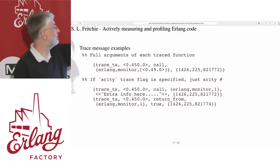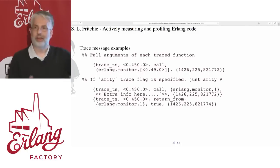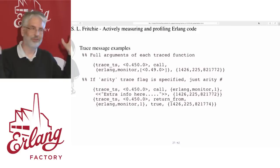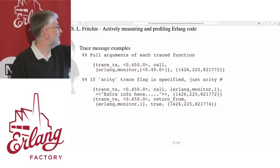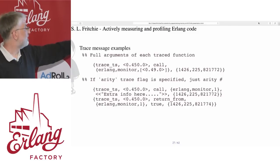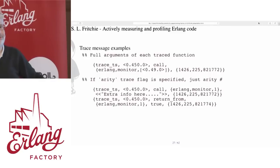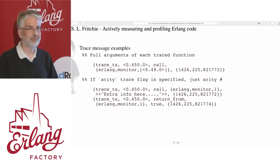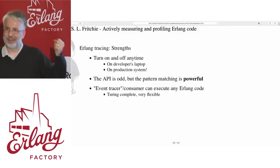Here's an example of the arguments you can get in the trace message. If there's an option that gives you just the arity number — so if you have a really big data term, you end up logging a lot of data, sending big messages. Big messages mean larger overhead. If you're sending millions of these messages a second, you probably want them small. So you can ask for just the arity. The return_from item, if you enable that option, is actually the return value from the function. You can turn this on and off any time — on your laptop, in production, anywhere. It's really cool.